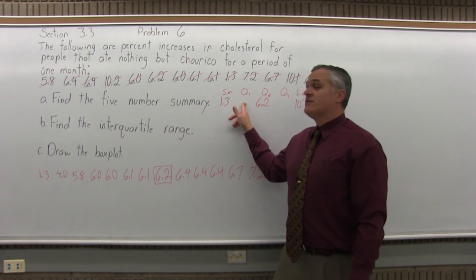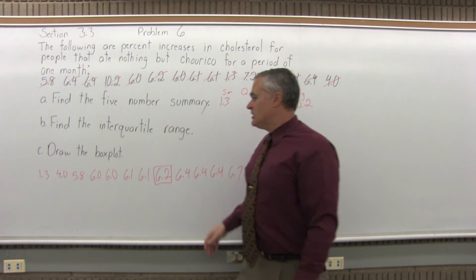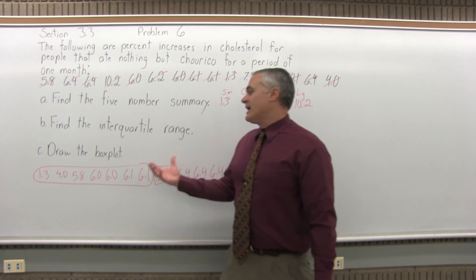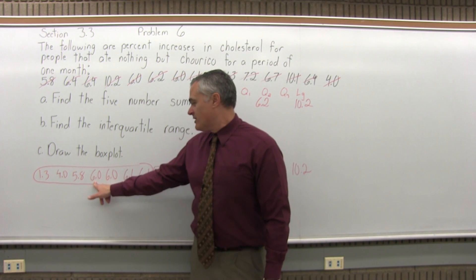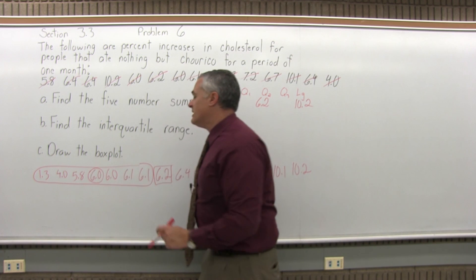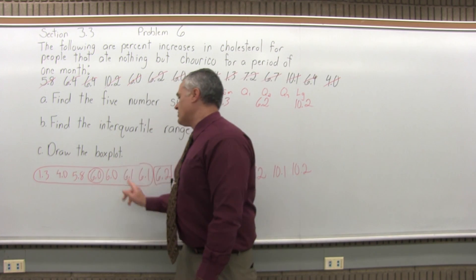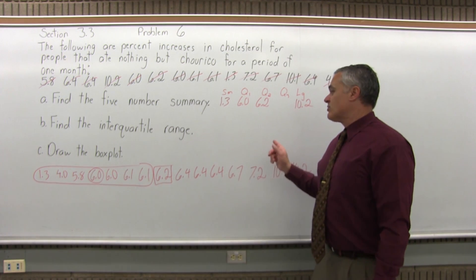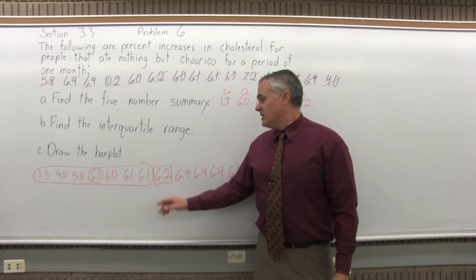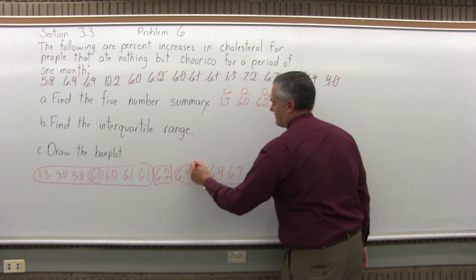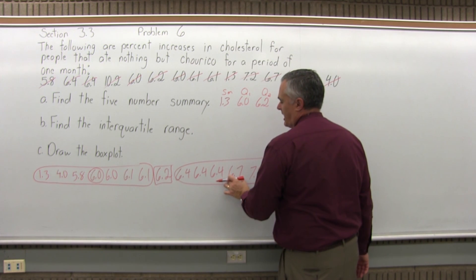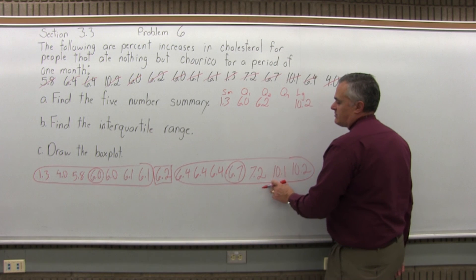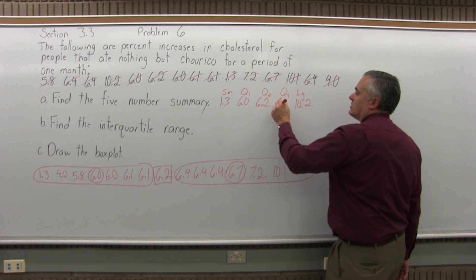Now I can find Q1. Q1 is the median of the smaller half of the data not including Q2. So the smaller half of the data not including Q2 are the first seven data values. Seven, I have to find a median. Again, seven is odd, so there's going to be one value right in the middle of the list of seven data values, which will be 6.0. There are three data values that are smaller, three data values that are larger. So my Q1 is 6.0. And finally Q3. Q3 is the median of the larger half of the data not including Q2. So not including Q2, the larger half is the larger seven data values. Again, seven is an odd amount, so I should have one value right in the middle, which would be 6.7. Three values that are smaller, three values that are bigger. So 6.7 is Q3.